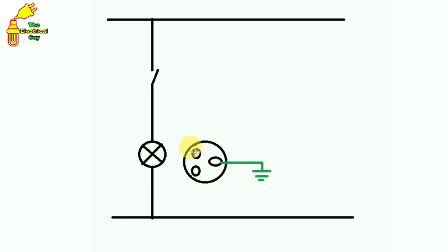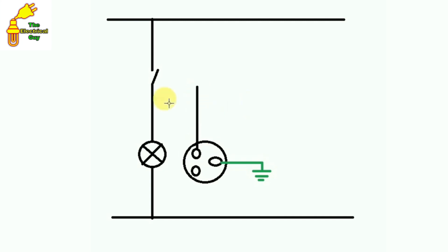Now the phase terminal and neutral terminal — to connect these, we will connect a wire here. This one is the phase terminal. Connect a wire from here and with the output terminal of the switch, connect this wire. In this way we will connect this wire.